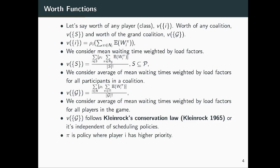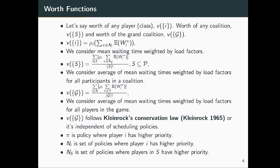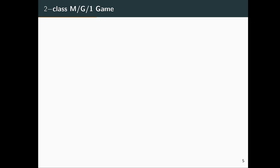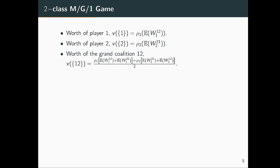For the grand coalition, we consider all players rather than just participants in a sub-coalition. The grand coalition follows the Kleinrock conservation law and is independent of the scheduling policies. Pi_i is the policy where player i has highest priority; N_i is the set of policies where player i has higher priority; N_S is the set of policies where players in S have higher priority. For the two-class game with n=2, we get expressions for v(1), v(2), and v(1,2).